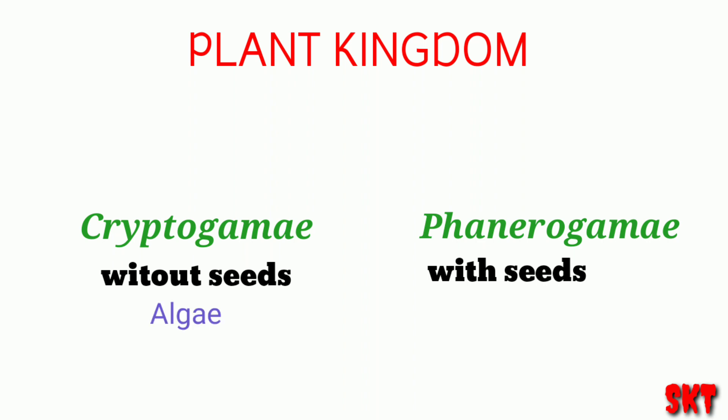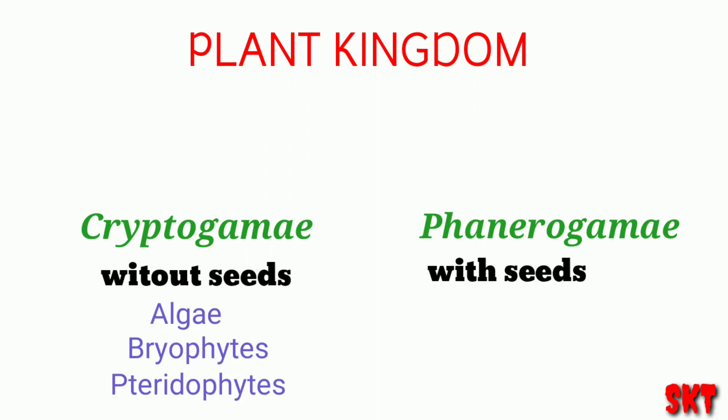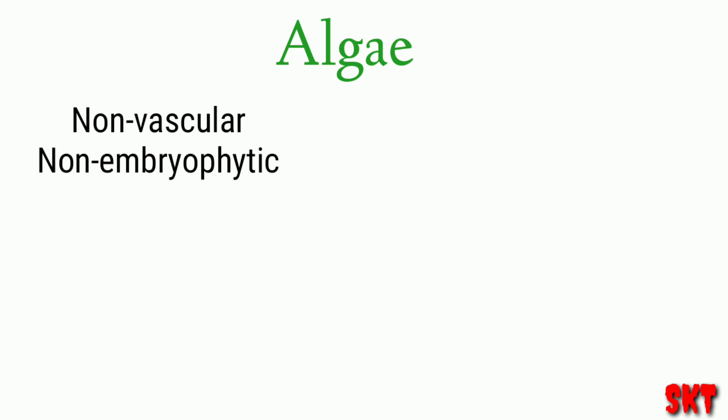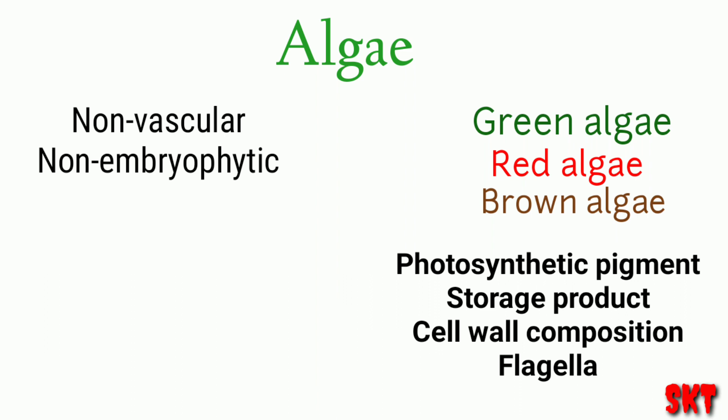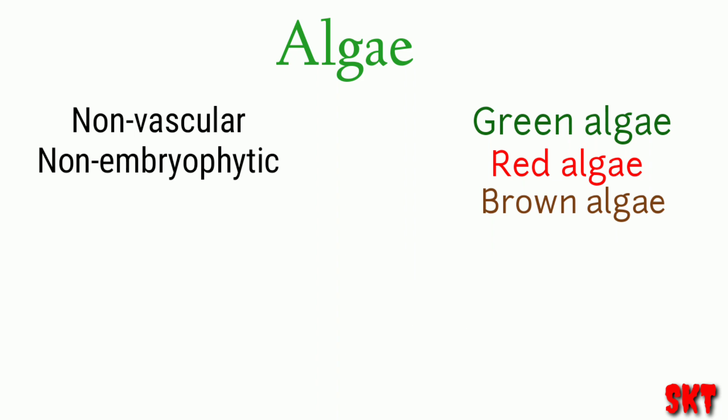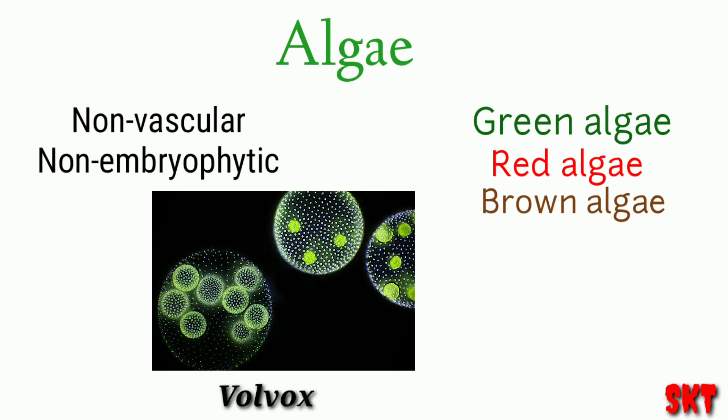Cryptogamae is subdivided into algae, bryophytes, and pteridophytes, whereas phanerogamae is subdivided into gymnosperms and angiosperms. The first one is algae. These are chlorophyll-bearing, nonvascular, non-embryophytic plants. They mainly include three groups: green algae, red algae, and brown algae. These three groups are classified by the following characters: primary photosynthetic pigments, storage products, cell wall composition, and type and location of flagella. Common examples are Volvox, Polysiphonia, and Dictyota.